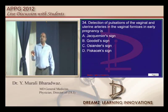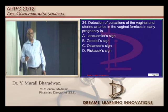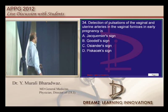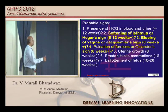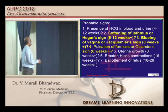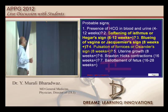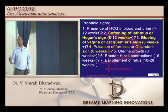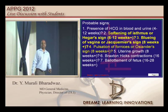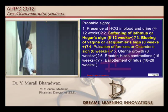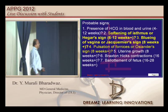Now, one question on early pregnancy detection — a favorite topic. Softening of the isthmus is Hegar's sign, bleeding of the vagina is Jacquemier's sign, and pulsation in the lateral fornix is Osiander's sign, which is typically found at 8 weeks. That is the reason Osiander's sign becomes the answer.